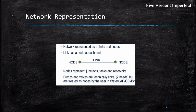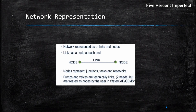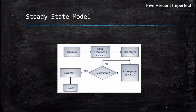In WaterGEMS, a network is represented as nodes connected by links, further connected to more nodes. Nodes can be reservoirs, tanks, junctions, valves, and various other elements. An important note: pumps and valves are technically links but are treated as nodes by WaterGEMS because they have two heads — one at the starting node and one at the ending node.